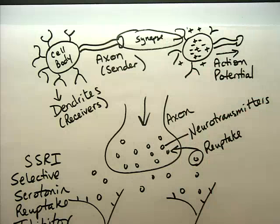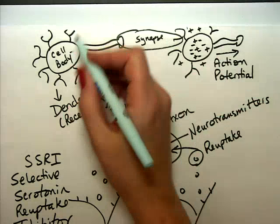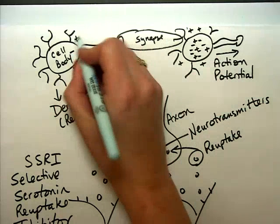So when the neurons want to communicate, and Dr. Kinzig really talked a lot about resting potential and action potential. When they're resting, when the neurons are resting, they're polarized. Negative on the inside, positive on the outside.